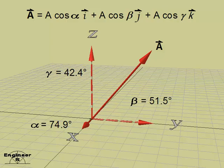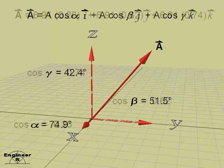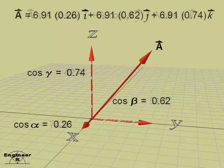The magnitude of vector v and the direction angles can be substituted into the expanded vector notation. In some applications, it may be convenient to substitute the value of the direction cosines.